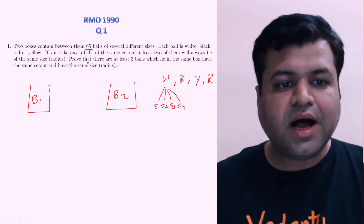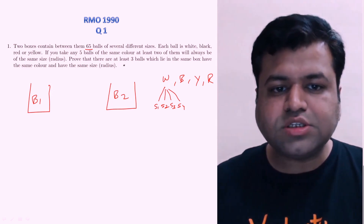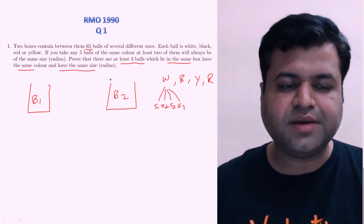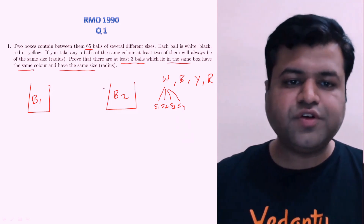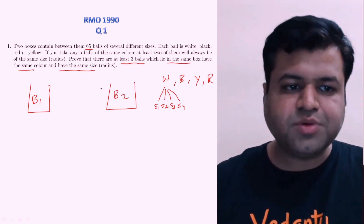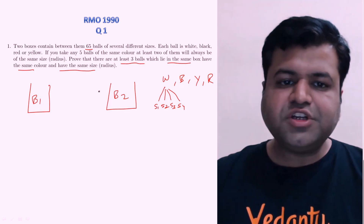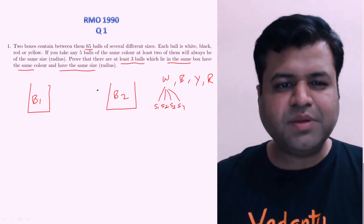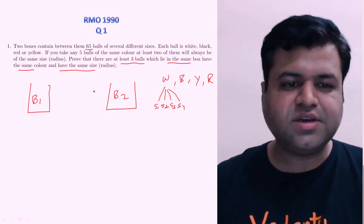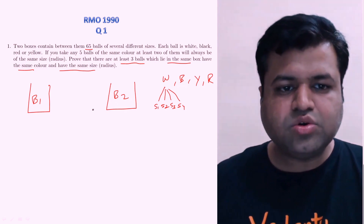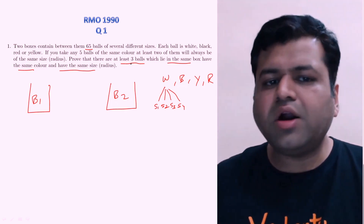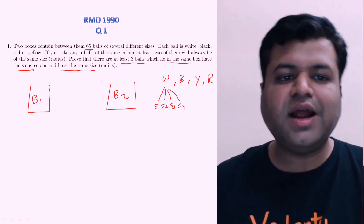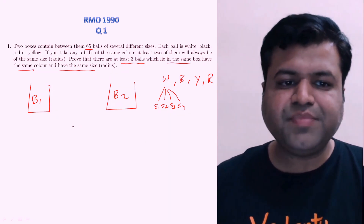Moving ahead, we need to prove that there are at least three balls which lie in the same box and have the same color and the same size. We can prove this either by the pigeonhole principle or by contradiction. We will simply prove it by contradiction — in fact both are one and the same way, just the manner of saying is different. So we will say: there are not at least three balls; basically there are a maximum of two balls which lie in the same box and have the same color and size.